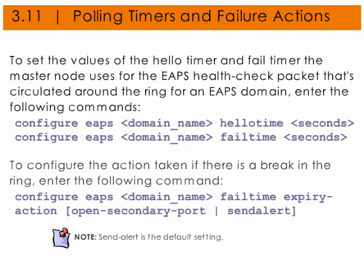To configure the action taken if there is a break in the ring, you would enter the following command: configure EAPS, domain name, fail time expiry action. There are two choices: either it will open the secondary port, or it will send an alert. Note that sending an alert is the default setting.